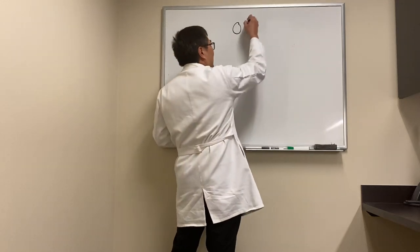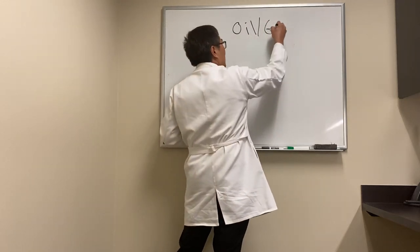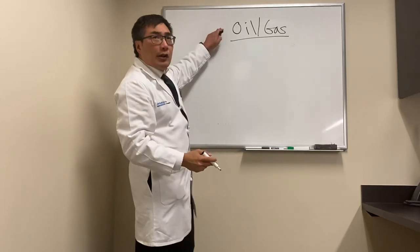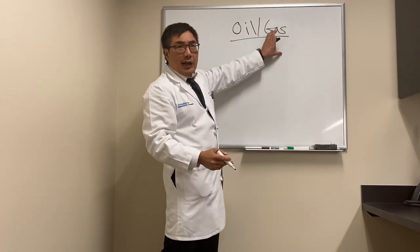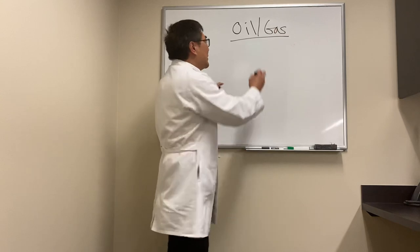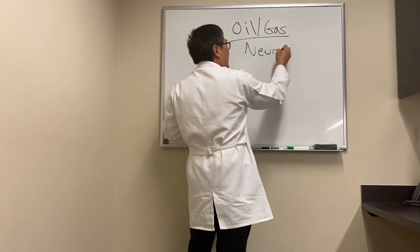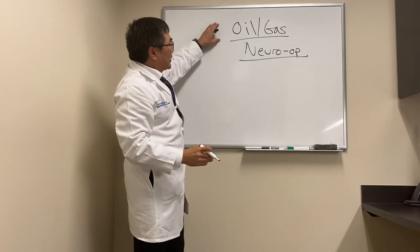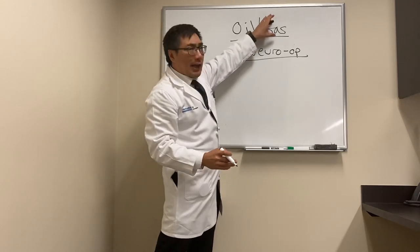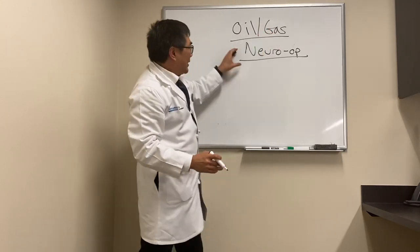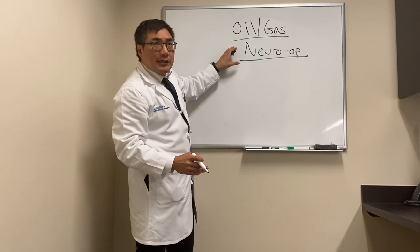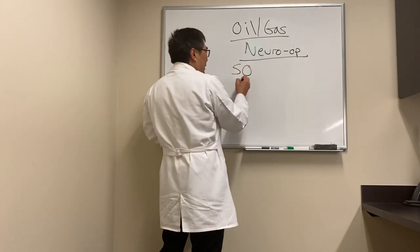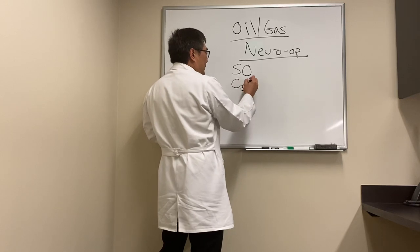Today we're going to talk about silicon oil and expandable intraocular gas — not the oil and gas industry. You might wonder why a neuro-ophthalmologist is talking about this, but when we use silicon oil and intraocular gas, it can produce unexplained vision loss that ends up in neuro-op.